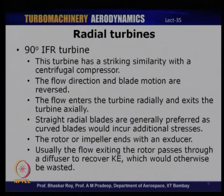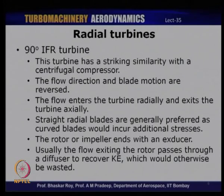Usually, the flow passing through the rotor also exhausts into a diffuser, which recovers part of the kinetic energy. If the flow exits the rotor into a straight duct, that kinetic energy is wasted, but using a diffuser helps recover part of it to increase overall work done. This is also used in hydraulic turbines, where they have what is known as a draft tube at the exit of the turbine, improving the overall pressure ratio and work output.